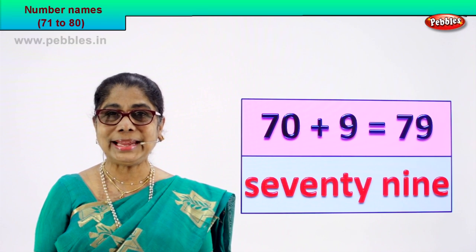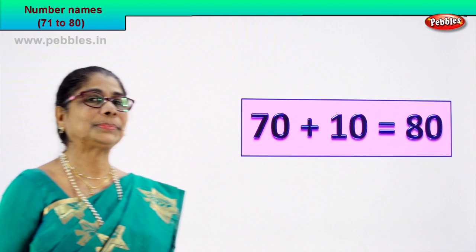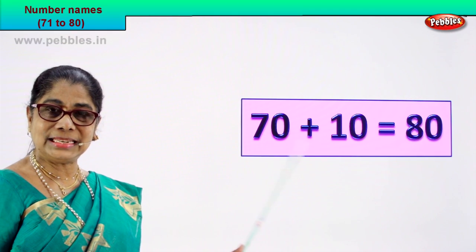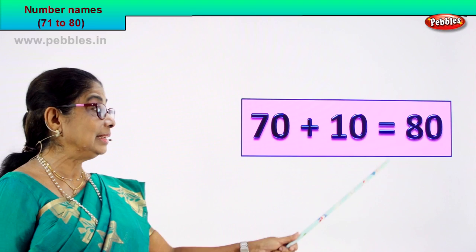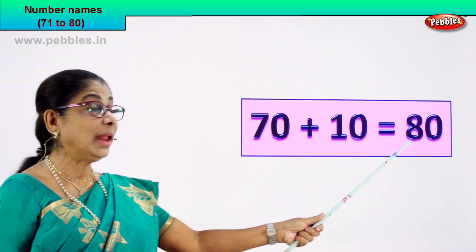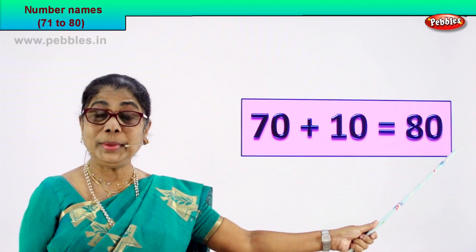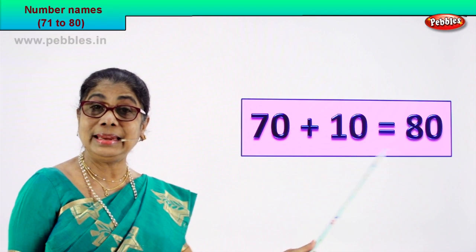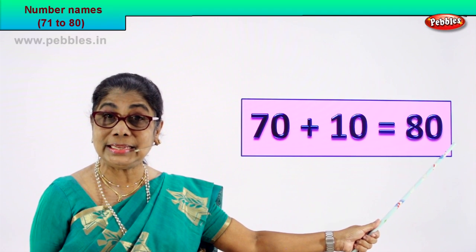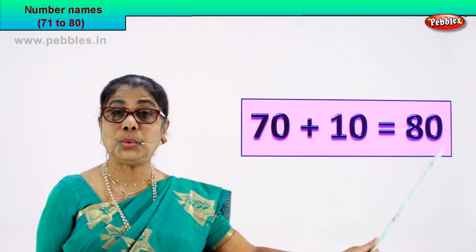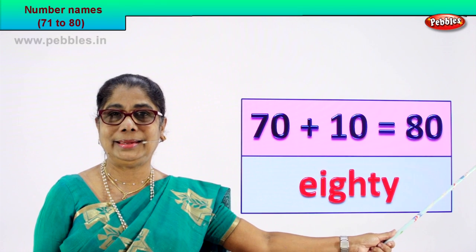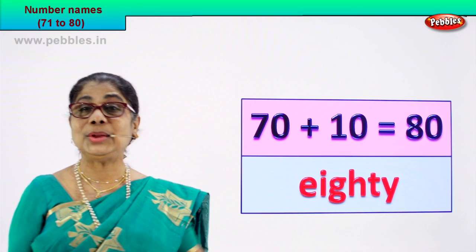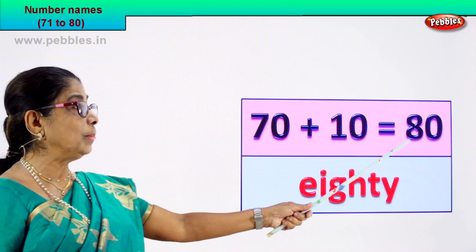Let's go to the next number. Look — 70 plus 10 is equal to 80. How do we get 80? 70 plus 10 is equal to 80. 80 — that's the numeral.